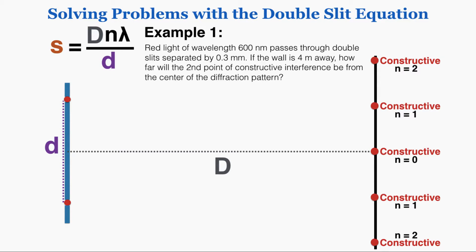Here's example problem one. Red light of wavelength 600 nanometers passes through double slits separated by 0.3 millimeters. If the wall is 4 meters away, how far will the second point of constructive interference be from the center of the diffraction pattern? I'm going to write down the variables that I have. I'm trying to find s specifically when n equals 2 — we'll call that s2, the distance from the center to the constructive interference point.